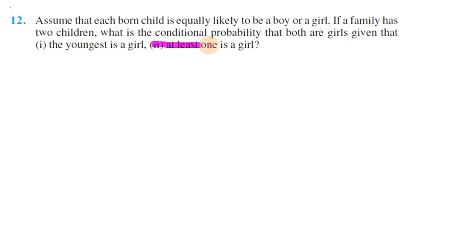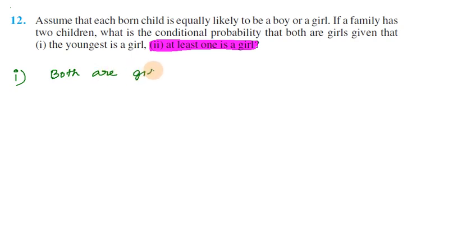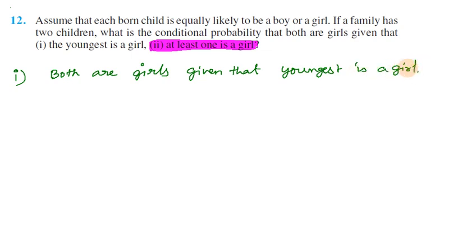What is the conditional probability that both are girls? Given that the youngest is a girl — the youngest is a girl. The family has two children, so what are the possible outcomes? Boy-boy, boy-girl, girl-boy, girl-girl.